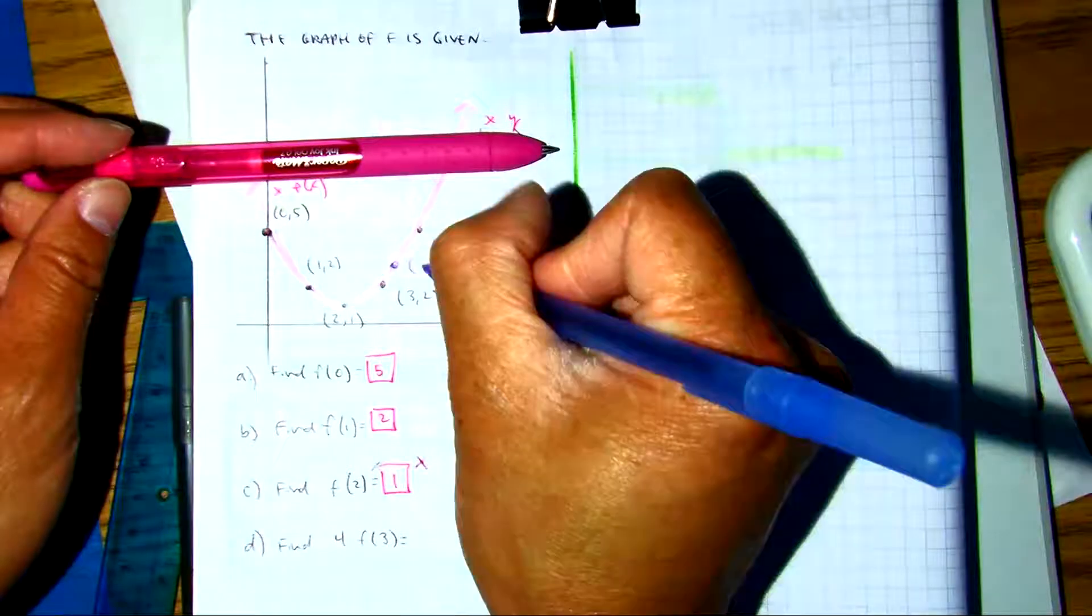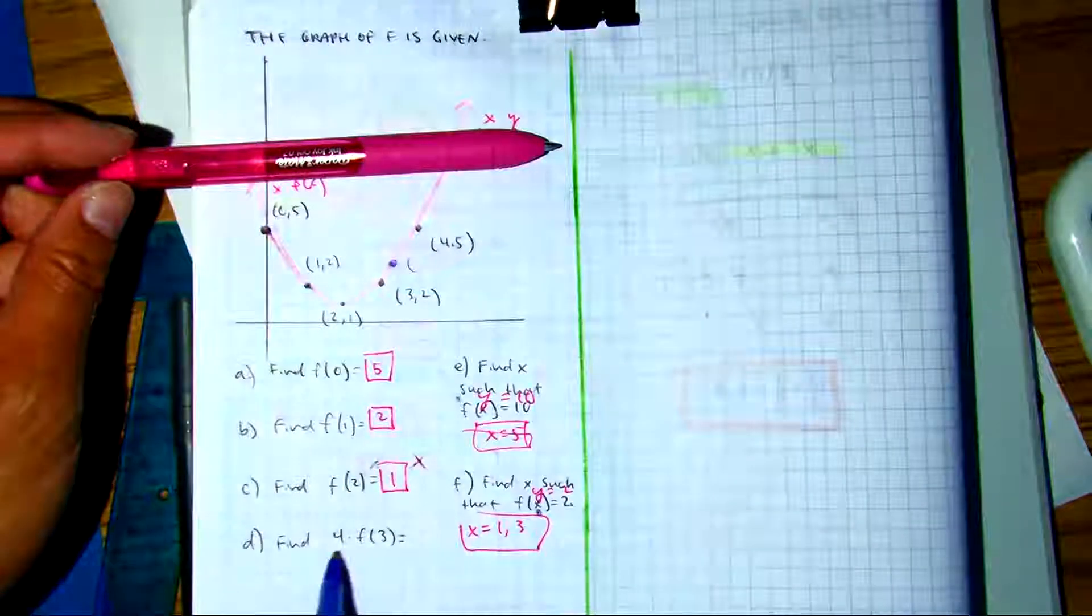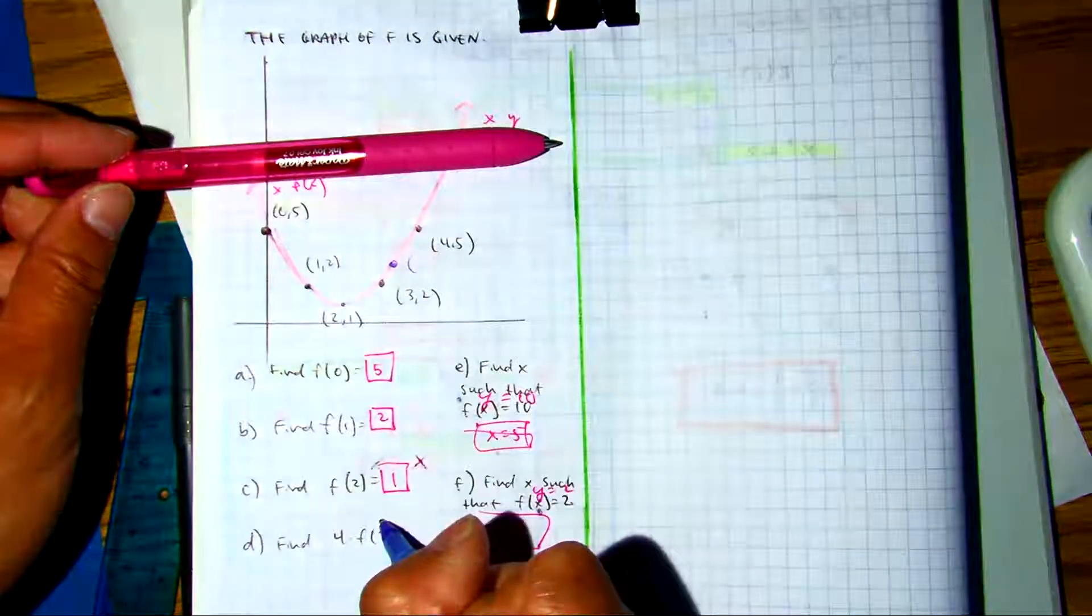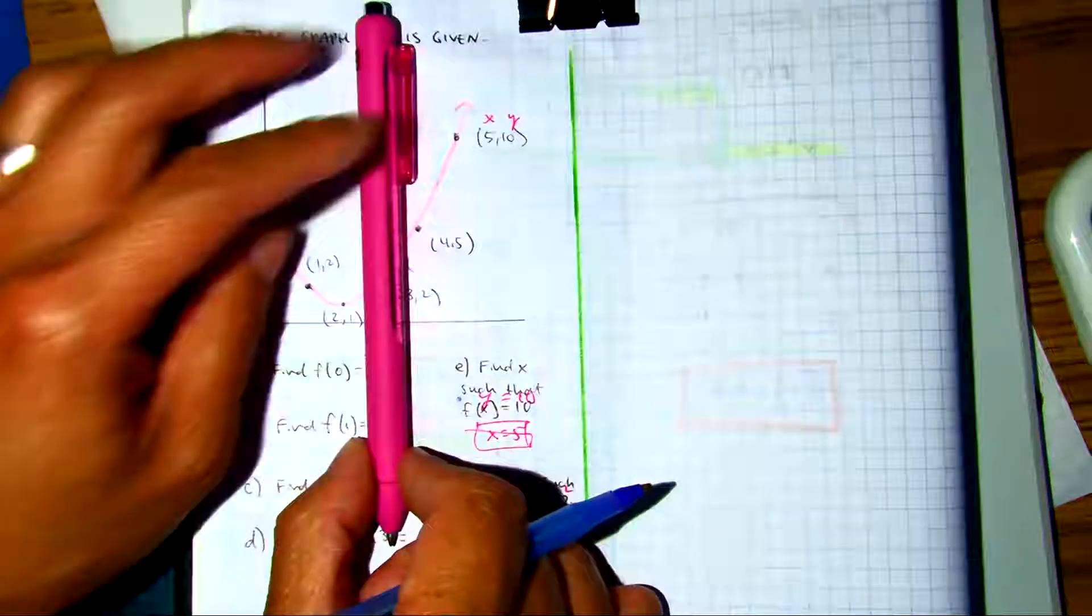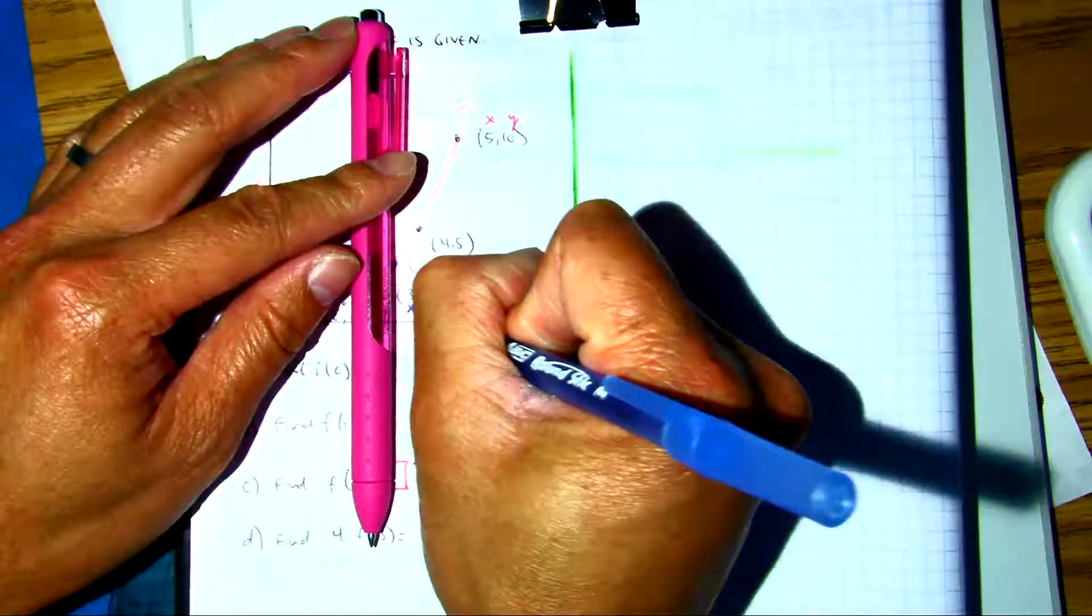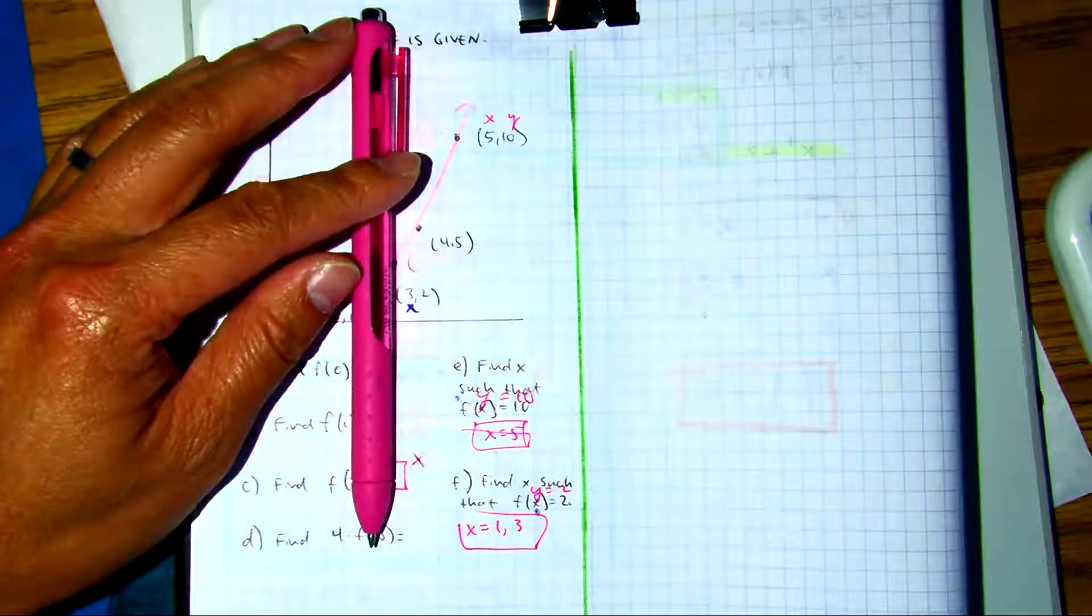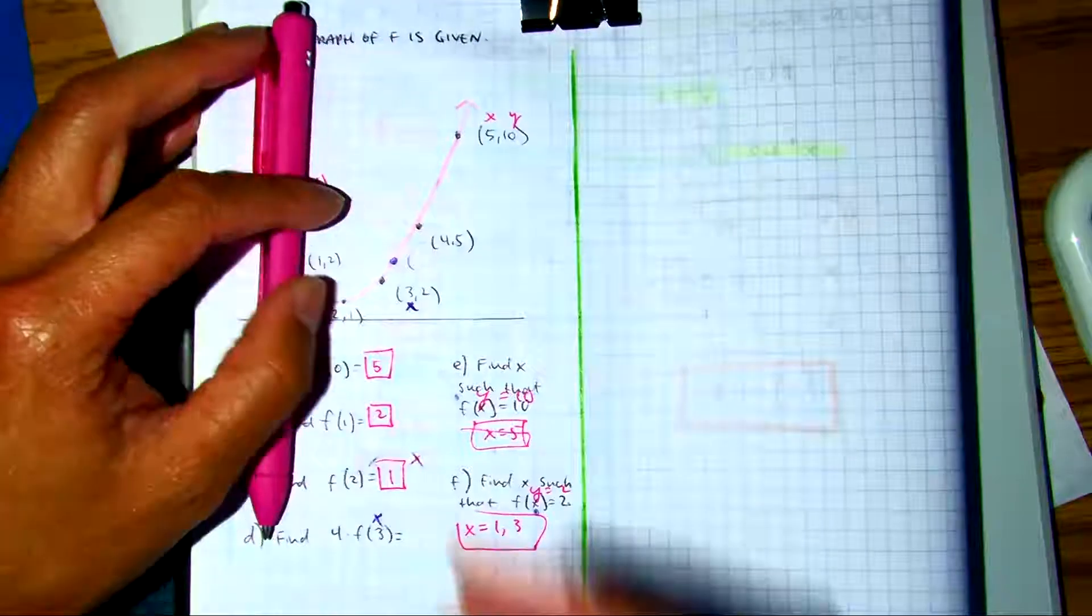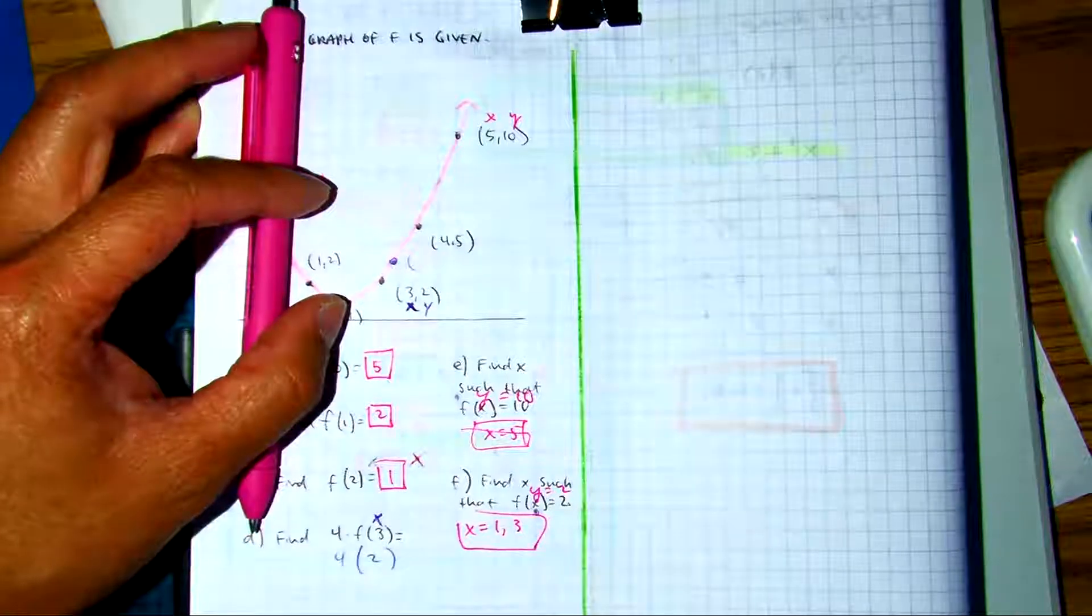If we're saying that your Y value... sorry, sorry. This is saying our X value is three, so I was wrong. Your X value is three, so what is your Y value? Two. So four times two, and four times two is eight.